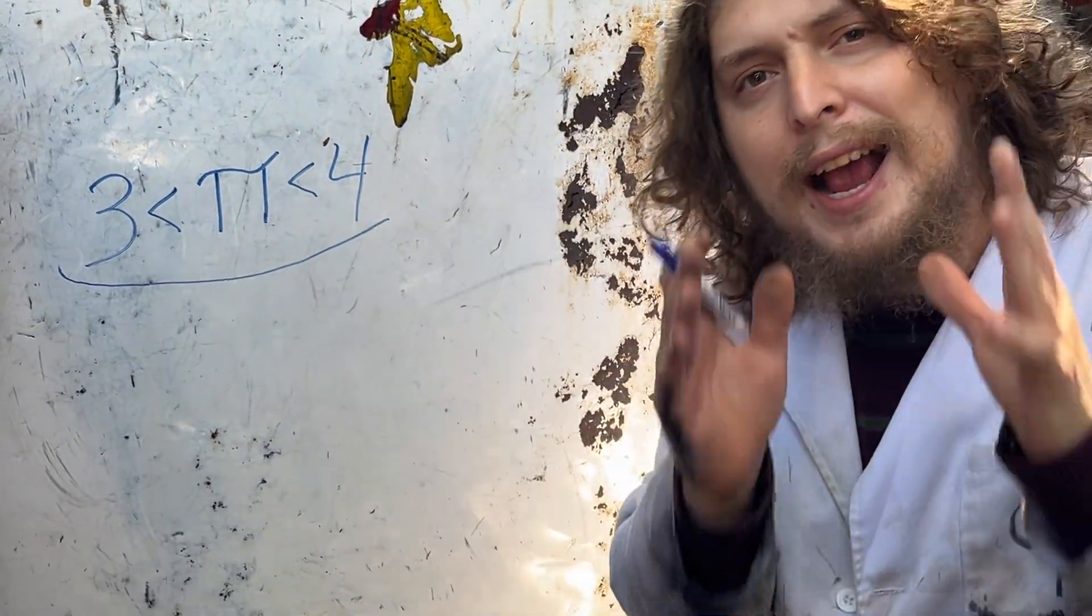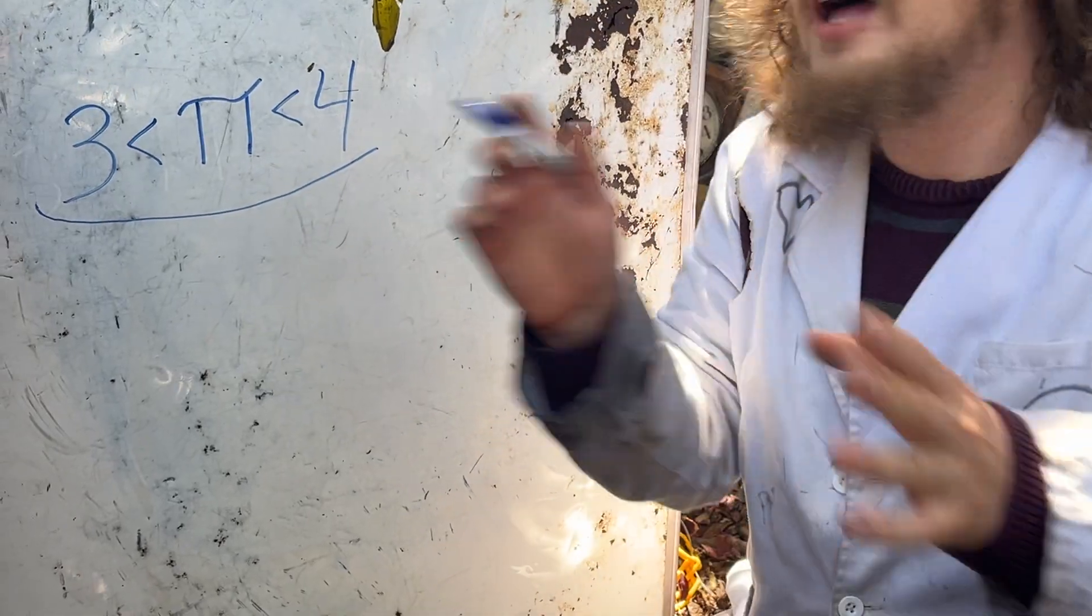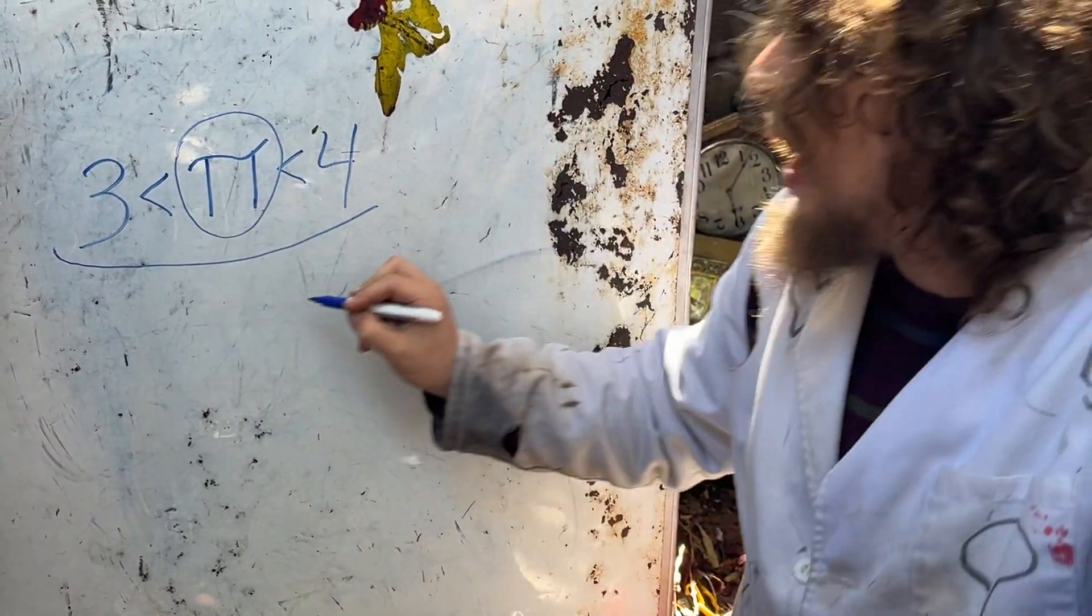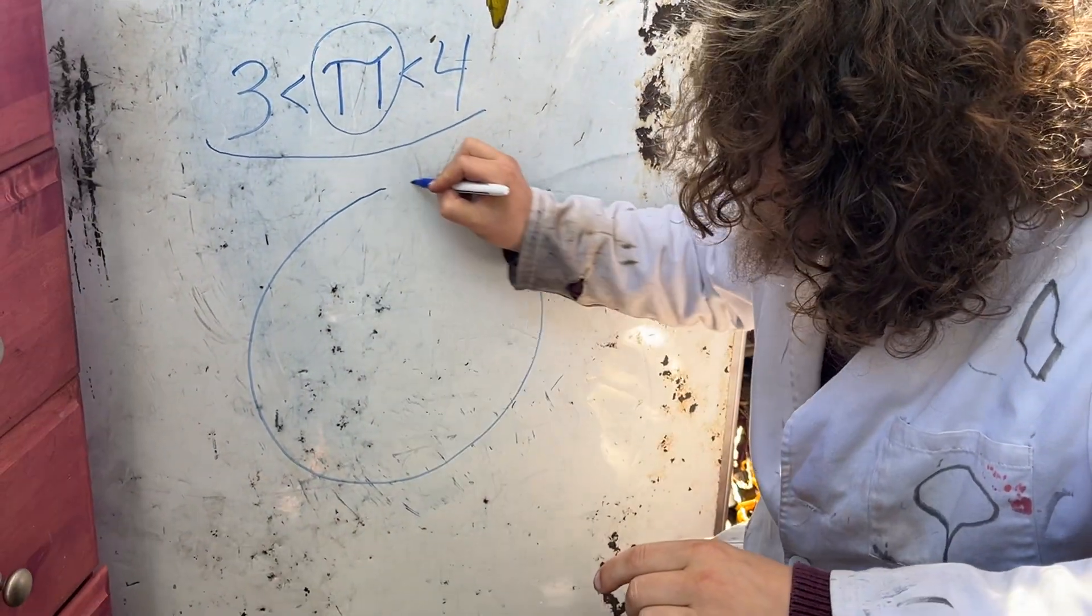So let's pretend that we were some ancient mathematicians who knew nothing about this number pi apart from the fact that it describes some relationships within circles. For example, that pi was how many times longer a circle was around compared to across.